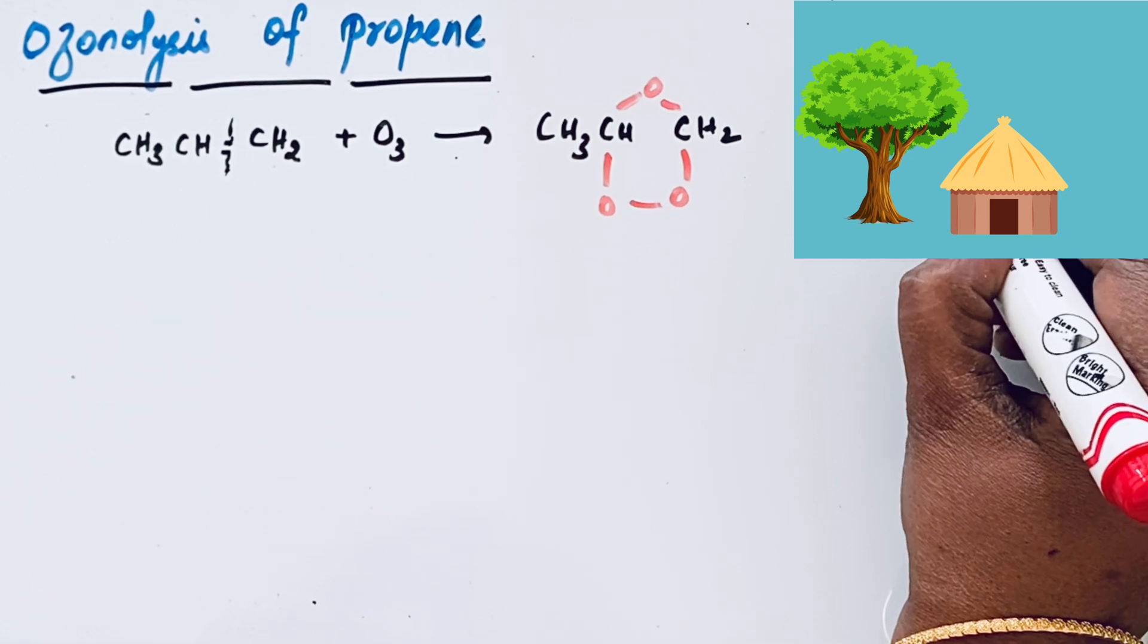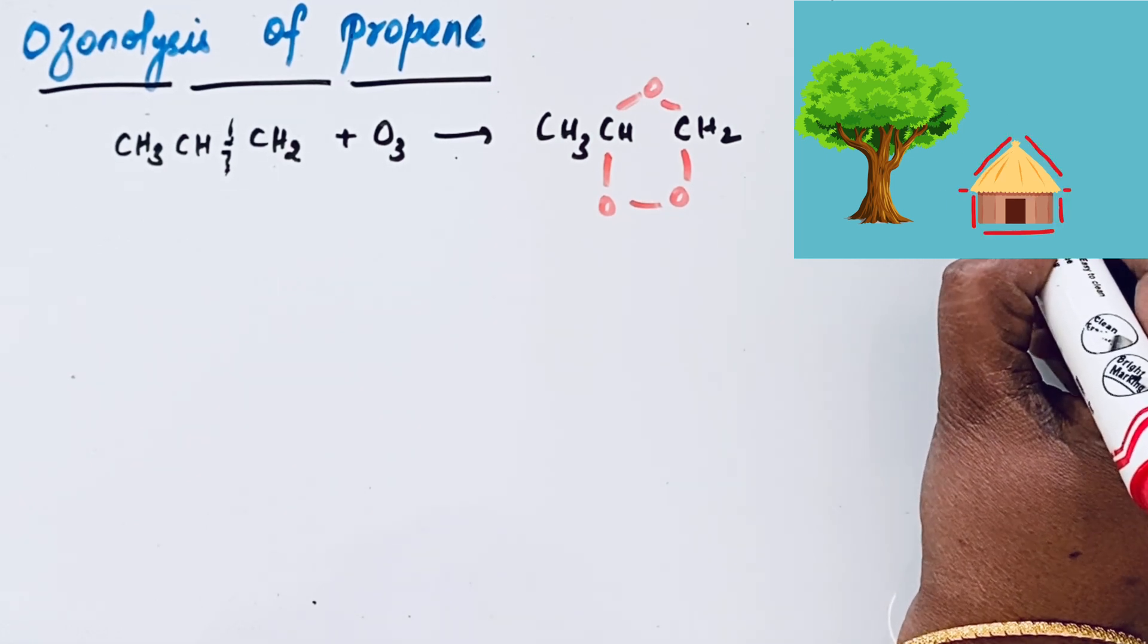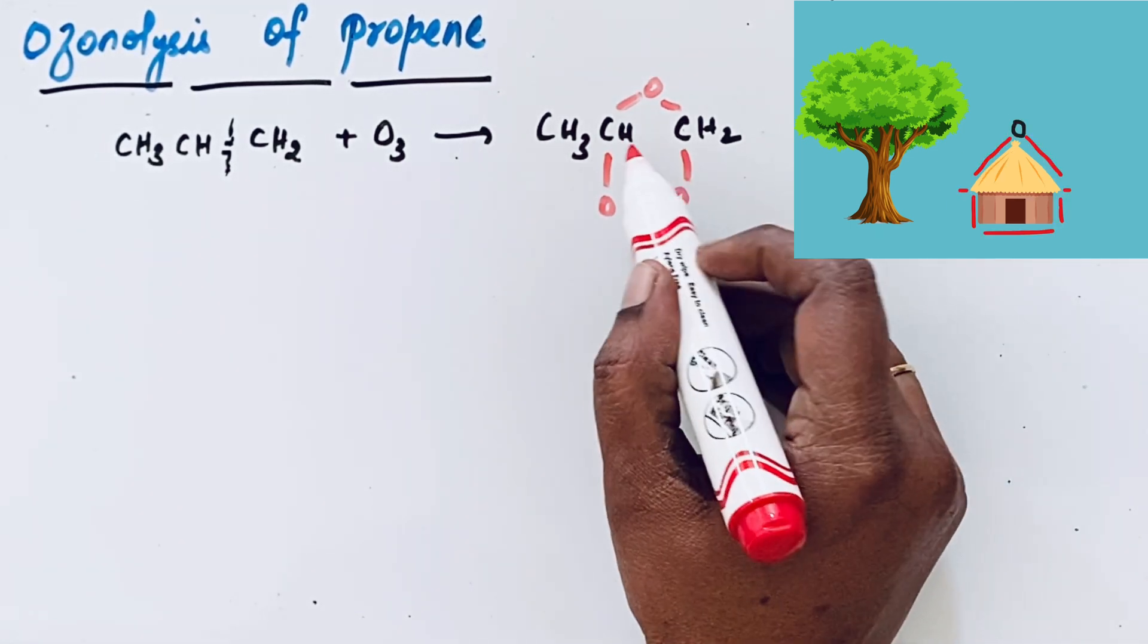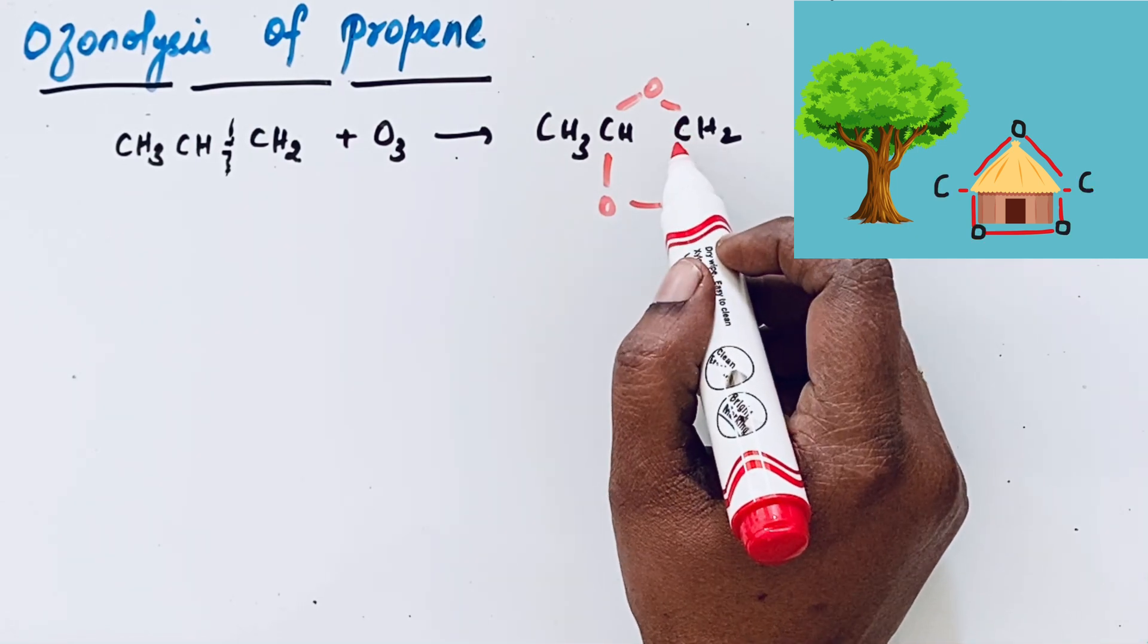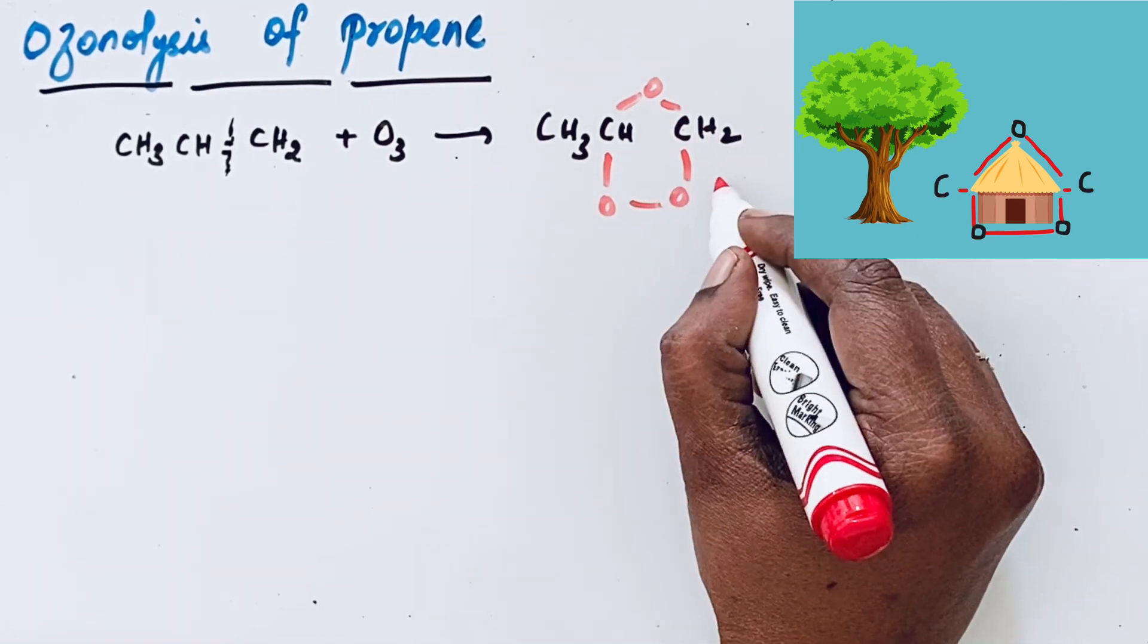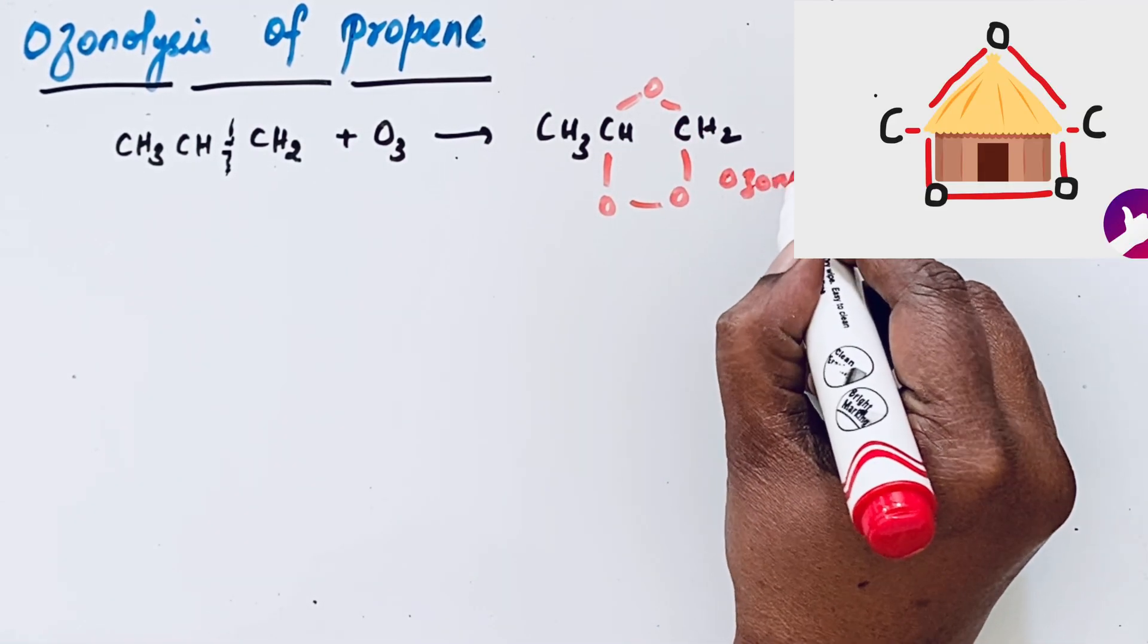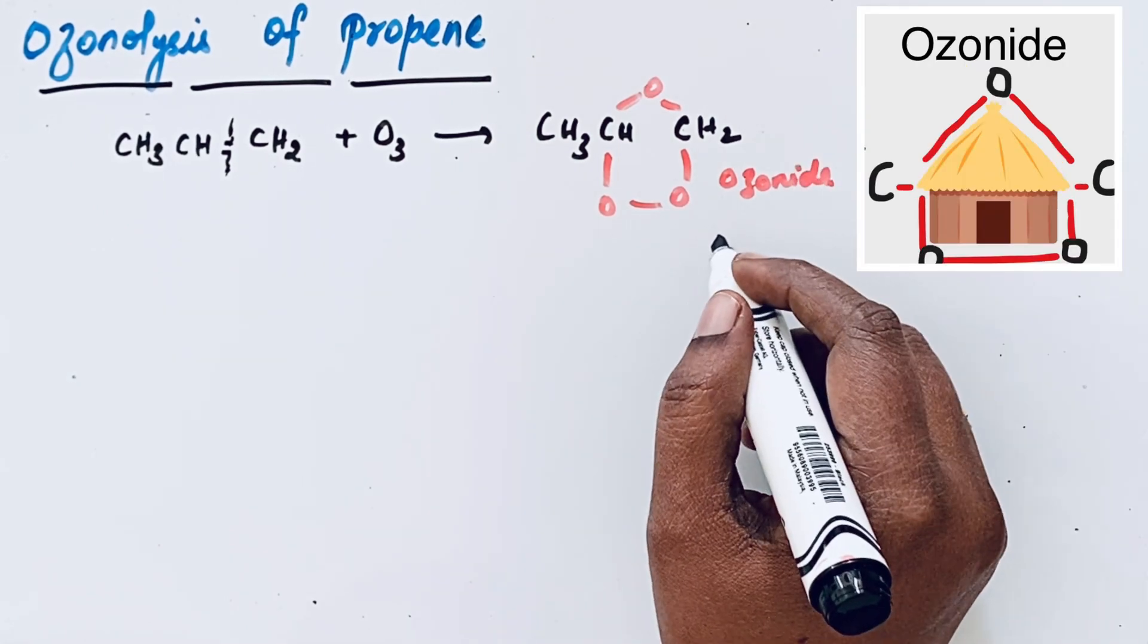I think it reminds you about your childhood, right? This forms a hut-like structure called ozonide. This is the intermediate.